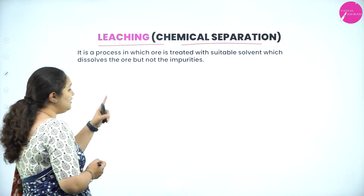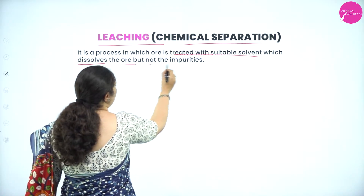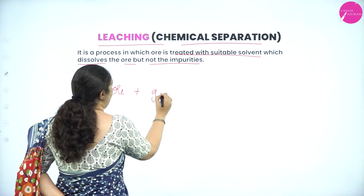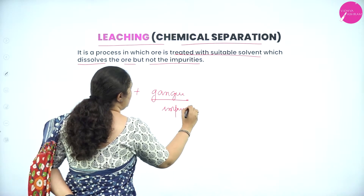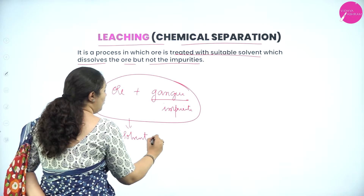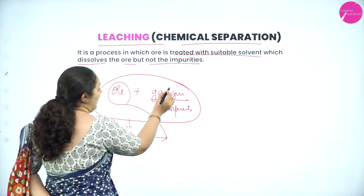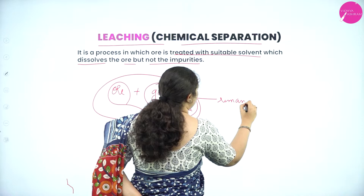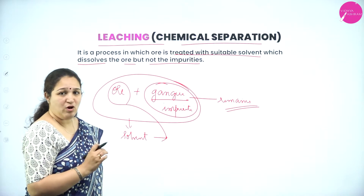In this process, the ore is treated with a suitable solvent which dissolves only the ore but not the impurity. Ore is present along with the gangue — that is the impurity. So the solvent dissolves only the ore; the gangue remains undissolved. This is the main principle of leaching.